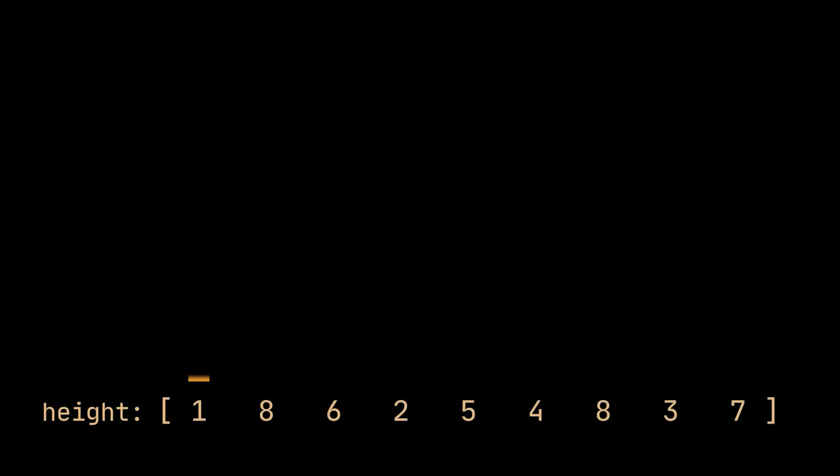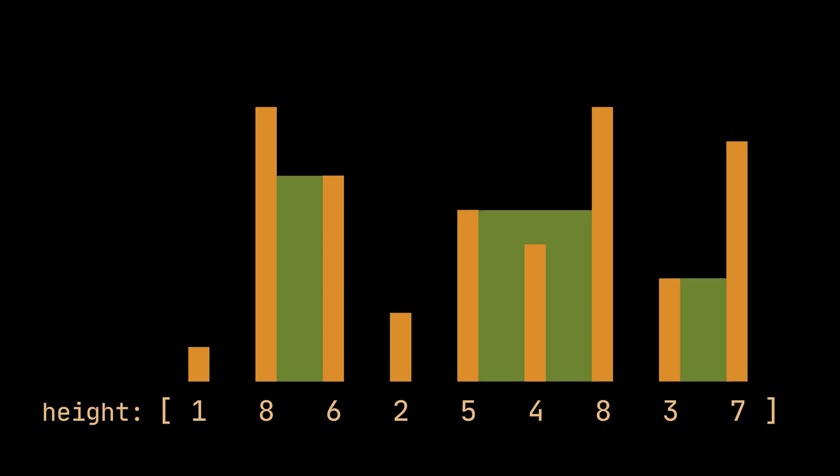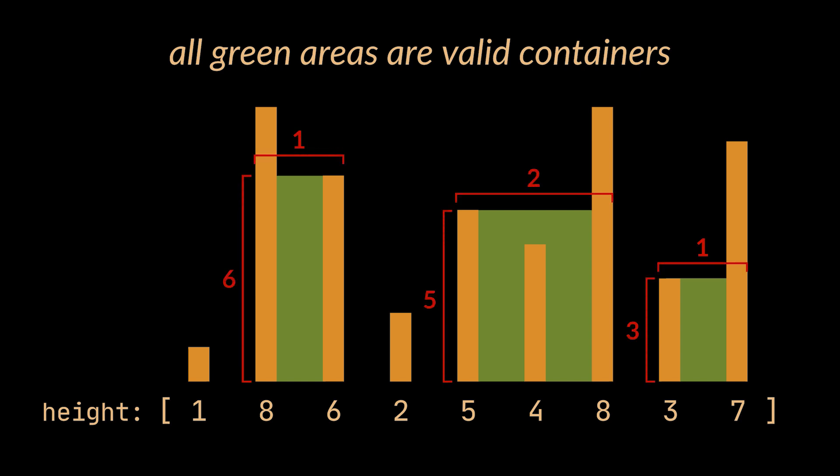This array can be represented with vertical lines such that the two endpoints of the i-th line are (i, 0) and (i, height[i]). What we need to do is find the container that contains the most water, a container being two vertical lines linked together in parallel to the x-axis. Then return the amount of water stored in that maximal container, that amount being the area of the container.